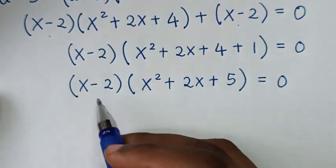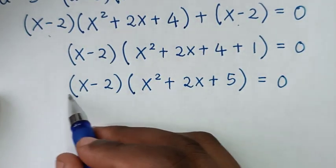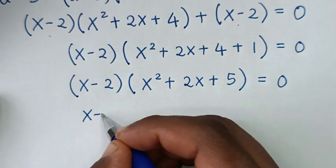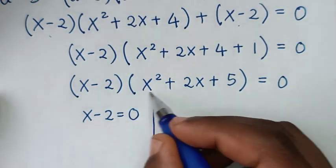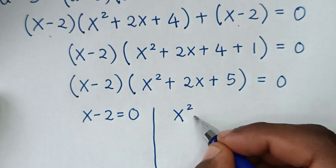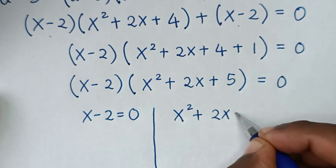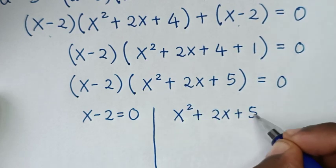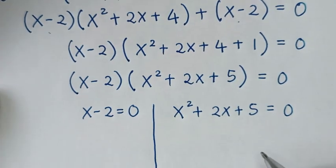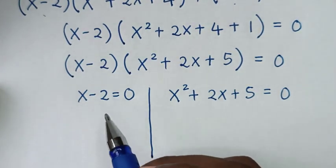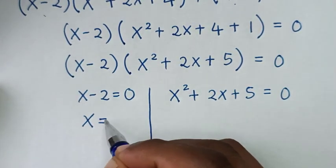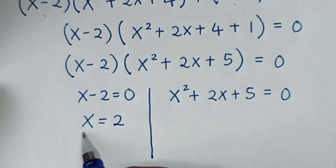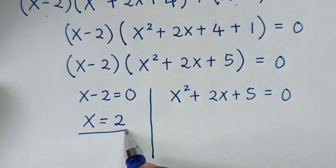From here we have two solutions. The first solution is x minus 2 equals 0, and the second solution is x squared plus 2x plus 5 equals 0. From the first solution, taking negative 2 to the other side gives x equals 2. This is the first value of x, which is the real solution.